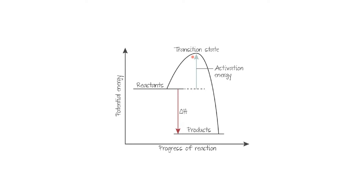Once particles are at the transition state, they will start to react. If activation energy is low, they can get to this state faster; if activation energy is high, they will take more time. Particles reach this state, they are individual and independent, they start to collide at different speeds. That speed depends on kinetic energy. If a particular particle has enough energy, it will collide and go down and become a product, releasing some energy if this is an exothermic process.